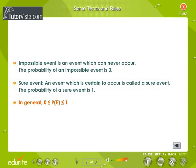In general, the probability of an event takes values greater than or equal to 0 and less than or equal to 1.